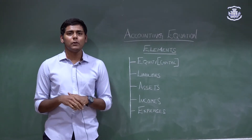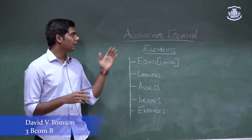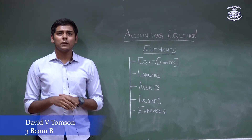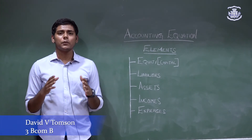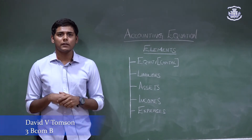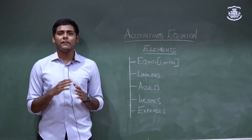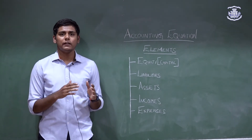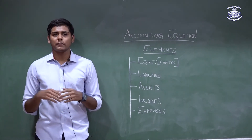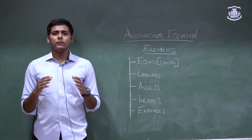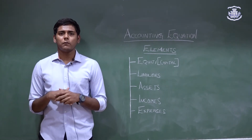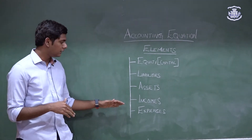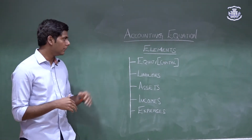Today we will be looking at the accounting equation. The accounting equation is derived from the duality concept, which says every transaction has both a credit and a debit aspect to it. All of these aspects will fall under one of five headings known as the elements.